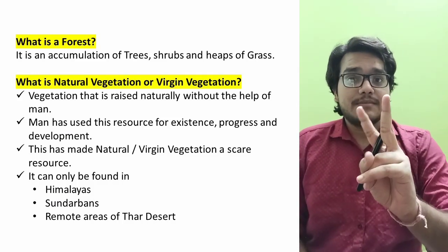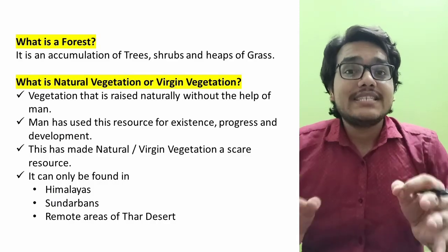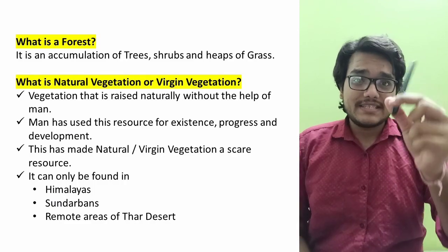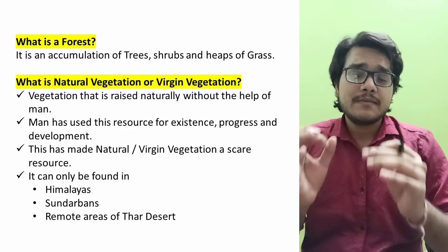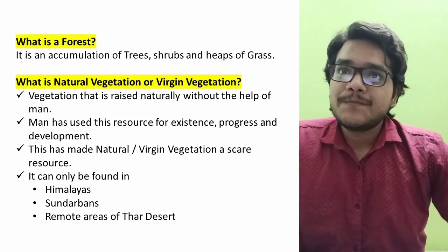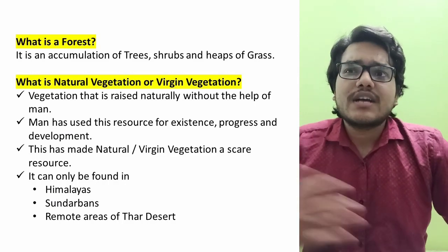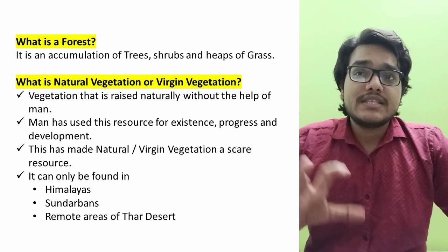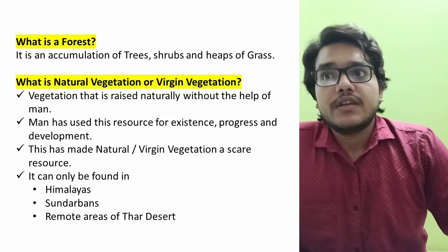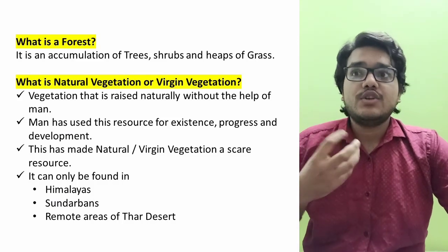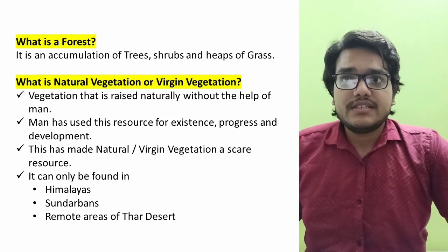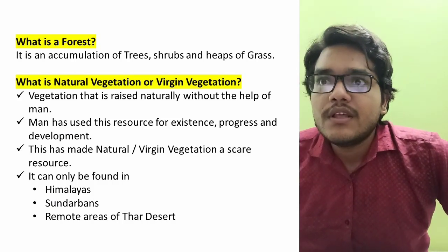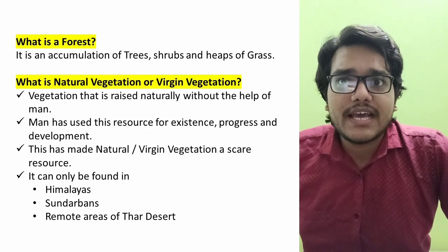In our first paragraph, we will understand two things: what is the meaning of forest, and what is the meaning of natural vegetation or virgin vegetation. The existence, progress, and development of man is dependent on resources. We have been fulfilling our needs by getting them from nature since early times, and forests are considered to be very important resources. A general meaning of forest is the accumulation of trees, scrubs, and heaps of grass.